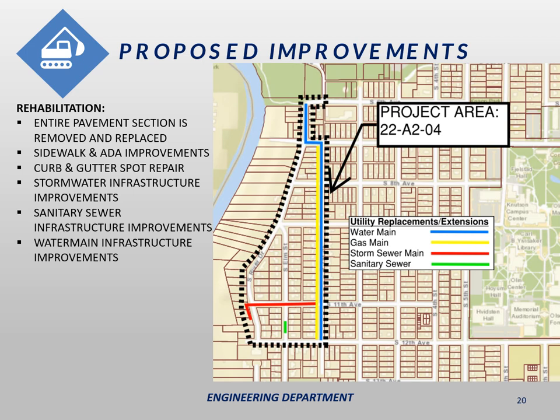Shown as the blue line, Moorhead Public Service will be replacing their water main on 1st Street, Elm Street, and 7th Avenue. The city and Moorhead Public Service have collaborated and the city has included the water main replacement under its contract, allowing the city and MPS to obtain the same contractor — bringing benefits such as easing construction, scheduling, consistency, and a less crowded project area. Lastly, shown in yellow, Xcel Energy will be replacing their gas main on 1st Street South, and this project will be completed ahead of the city's project.